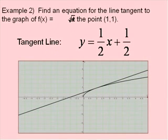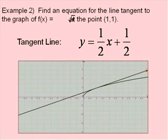And this is what the graph looks like. Looking at the original function, which is square root of x, and our tangent line, we can see that it does appear to be tangent to the curve at the point (1, 1).